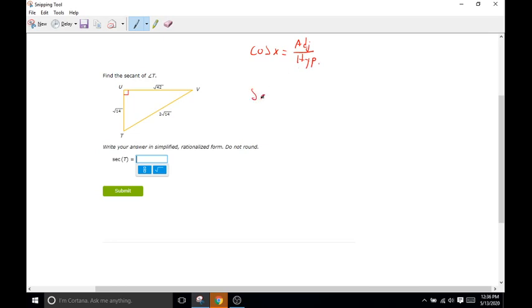Meaning the secant of X is going to equal hypotenuse over the adjacent. So the hypotenuse of the triangle, again, the opposite side of the right angle, is going to be two square roots of 14 all over the adjacent, and the adjacent for T is going to be square root of 14.